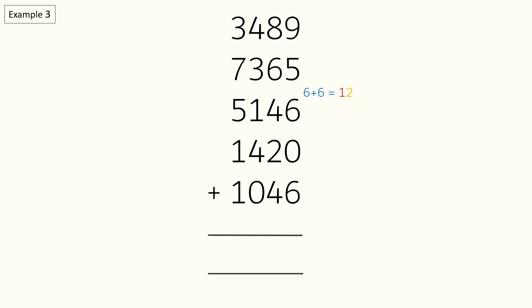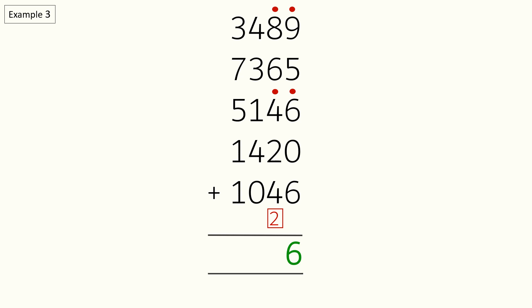This addition trick is applicable for any number of digits. Add till 10, put a dot, and continue adding with carry over if any. Write the last digit in the answer section. Next, count the number of dots and write them at the bottom of the next line. Then just repeat the same steps to get the final answer.